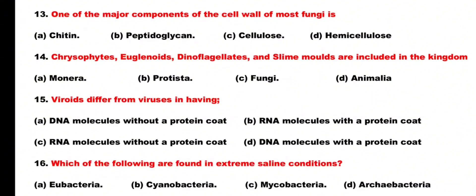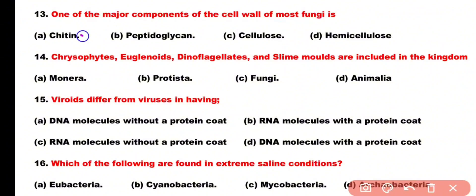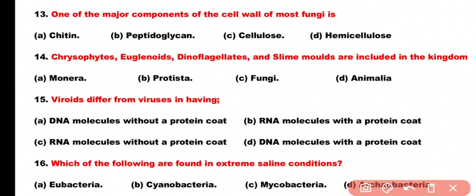Question number 13: One of the major components of the cell wall of most fungi is: chitin, peptidoglycan, cellulose, or hemicellulose. Correct answer is option A. Chitin is a major component of the cell wall of fungi.